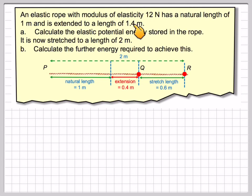An elastic rope with modulus of elasticity of 12 newtons has a natural length of 1 meter and is extended to a length of 1.4 meters. Calculate the elastic potential energy stored in the rope.